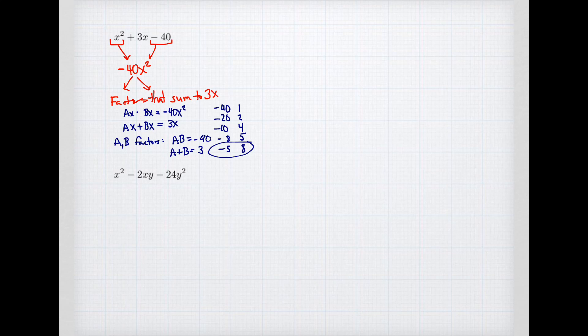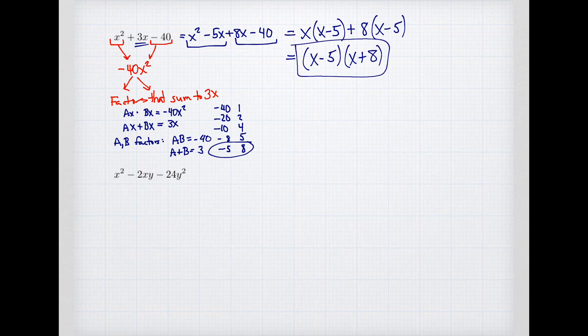What we're going to do is we're going to rewrite this original formula now as x squared. And the 3x we're going to expand into those two terms: minus 5x and plus 8x minus 40. So I've gone from three terms to four terms. And this I'll be able to do by grouping. The first pair has a common factor of x times x minus 5. And the second pair has a common factor of 8 times x minus 5. So that I can factor out the common factor times x plus 8. And that is my factored version.